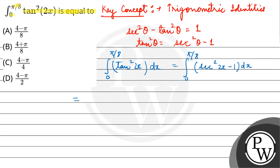So this is equal to... the integration of secant square theta is tan theta, so here it will come tan 2x.